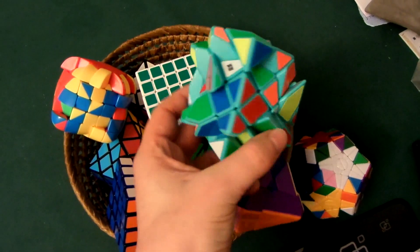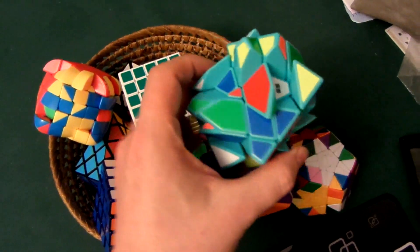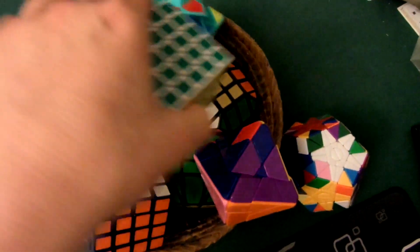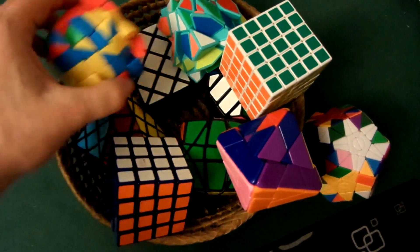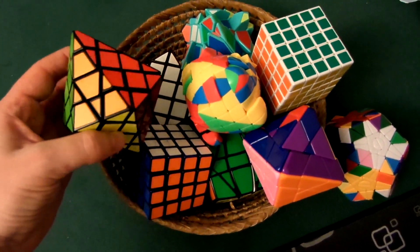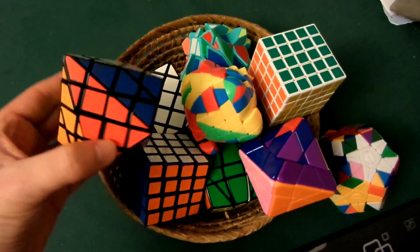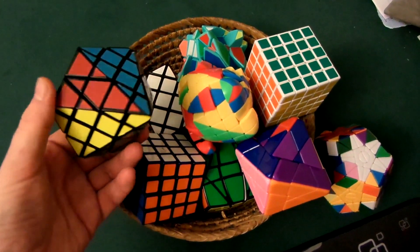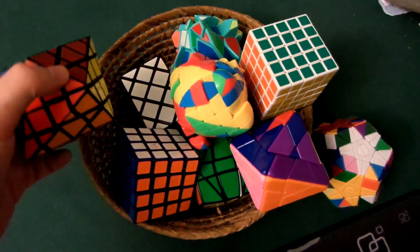The YJ Axis Cube, and then we have the Dancheng, I think it's called the Super Dye Pyramid. I think this is a really nice looking 4x4 shape mod. I do have a few others, I didn't bring all of them out.